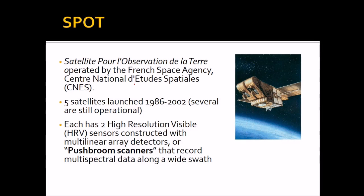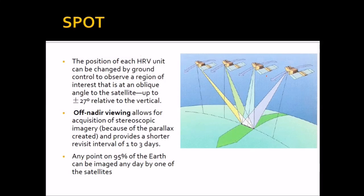Now coming to SPOT, which is actually a French satellite. Five satellites have been launched. Each has 2 high-resolution visible (HRV) sensors, constructed with multi-linear array detectors or push broom scanners, that record multi-spectral data along the full swath. The position of each HRV can be changed by ground control to observe a region of interest at an oblique angle up to plus or minus 27 degrees. This off-nadir viewing allows acquisition of stereoscopic imagery because you get a parallax, so you can have a very good 3D DEM from that.